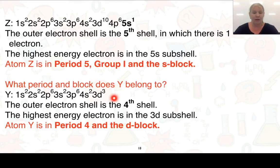Finally, if we look at Y, the highest outer electron shell is actually our 4S, but the highest energy electron is in the 3d subshell. And so we say that it's in period 4 and in the D-block. So that's some examples for looking at positions on the periodic table when looking at electron configurations. Thanks for watching, and we'll see you next time.